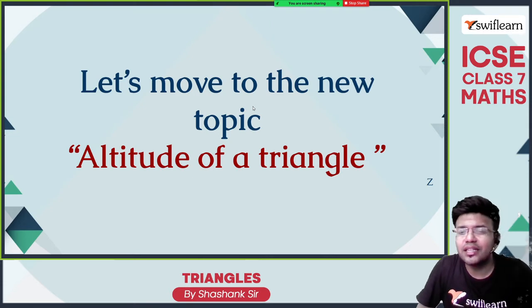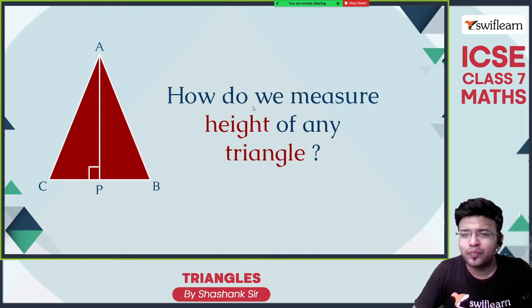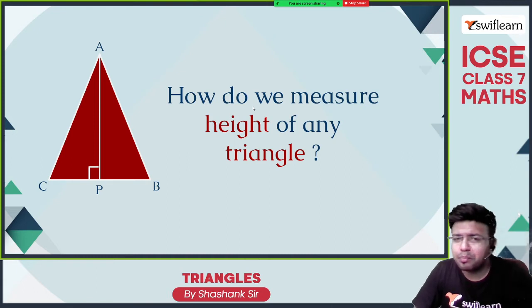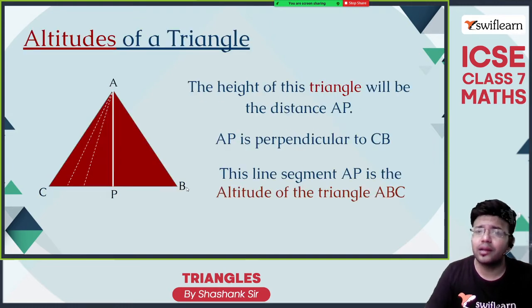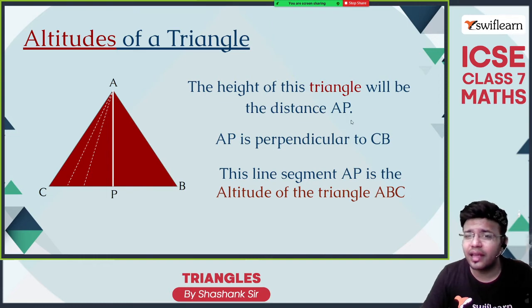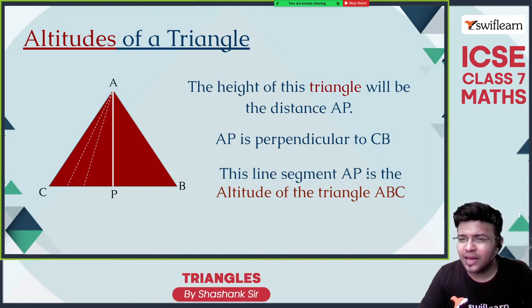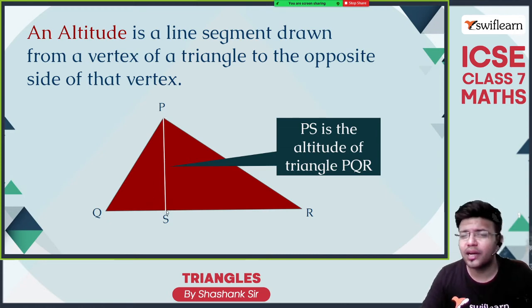Now let us move to the topic altitude of a triangle. How do you measure the height of any triangle? This is a triangle ABC. AP is the height of the triangle. AP is 90 degrees to the base and it is touching the vertex. This is the height of the triangle, also known as altitude. The height of the triangle will be the distance AP, which is the shortest distance. In order to get the shortest distance, AP should be perpendicular to CB. The line segment AP is the altitude of triangle ABC, and altitude is a line segment drawn from a vertex of a triangle perpendicular to the opposite side.